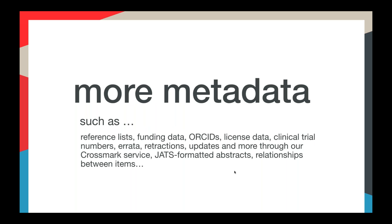We also collect non-bibliographic data about the items being registered, which can be as useful as the bibliographic metadata. We collect reference lists so that members can see what other members are citing their content. We collect funding data to connect research outputs to funding. We collect ORCIDs, text and data mining license data, clinical trial information, and information about errata, retractions, and updates through our Crossmark service. You can also send us abstracts and information about relationships between related items — for example, that this is a preprint of a journal article, or that this is a dataset for a given item.